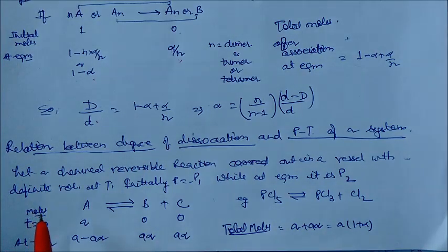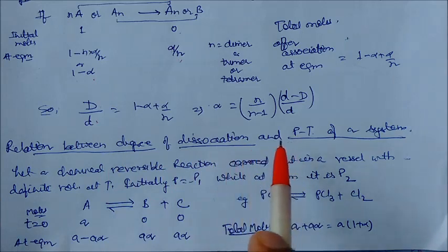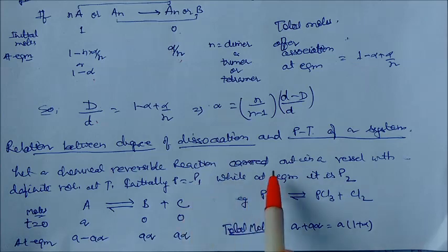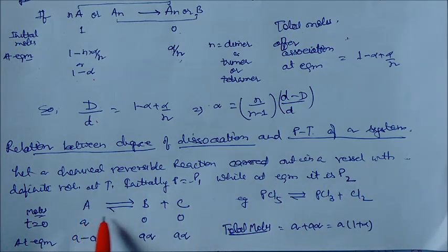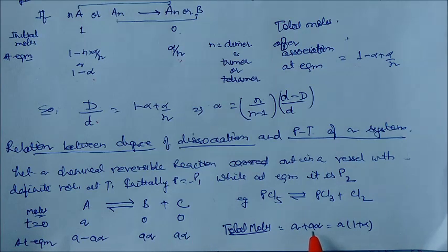Now we have one more point: the relation between degree of dissociation and the pressure and temperature of a system. Consider a reversible chemical reaction carried out in a vessel with definite volume and temperature. Initially the pressure is P₁ and at equilibrium it becomes P₂. For A → B + C: initial moles A, 0, 0; at equilibrium A(1-alpha), A·alpha, A·alpha; total = A(1 + alpha).